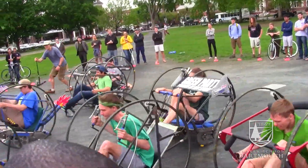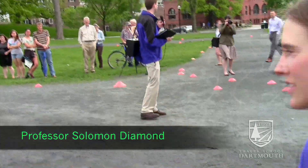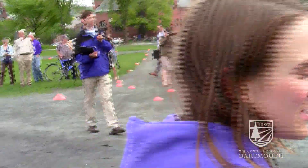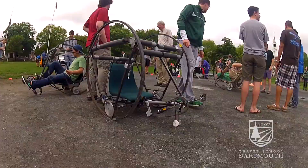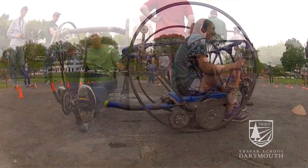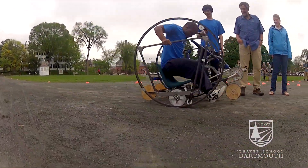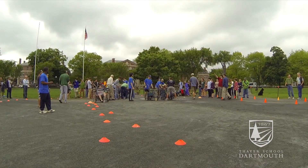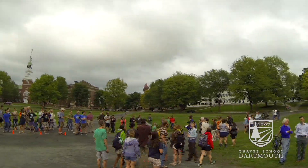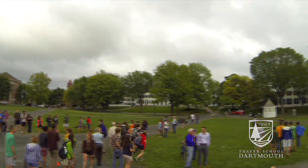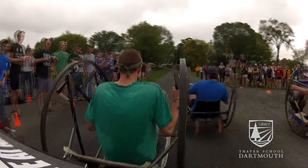Welcome everyone to the 2014 Engineering 146 Computer Aided Mechanical Engineering Design Die Wheel Car Race. We've got six teams of students competing today plus one team from last year, so we've got 24 students lined up here, six vehicles. It's a relay race — every student is going to get a chance to ride one lap, four laps total to win the race.